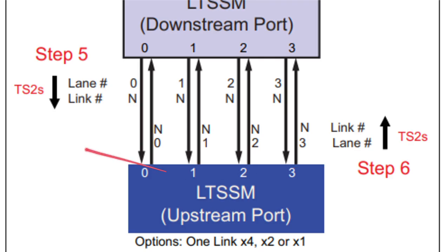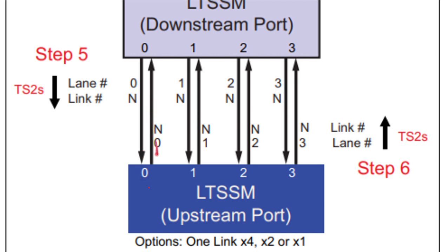Let's see here. This is the downstream port — it has four lanes: 0, 1, 2, 3. It's sending training sequences with link number as N paired on all the lanes. But this upstream port only received lanes 1, 2, 3. These three lanes received the data and reflected the same training sequence back. But the 0th lane is not working — maybe some design issue.